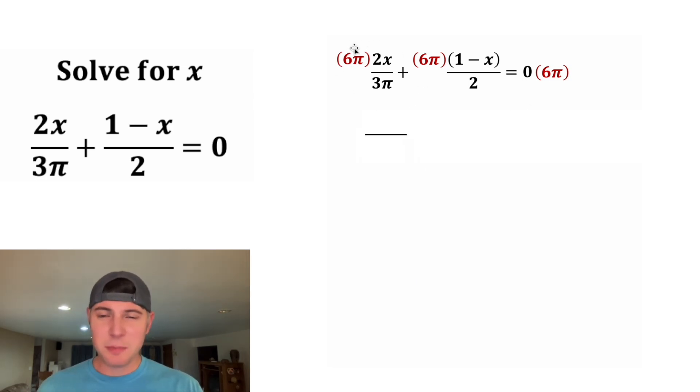For this first term, 6π times 2x is 12πx, and it's still going to be divided by 3π. And for this part, the 6π is going to distribute to both of these. So we're going to have two separate fractions divided by 2.